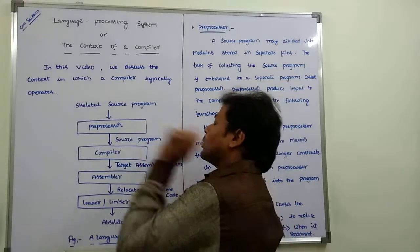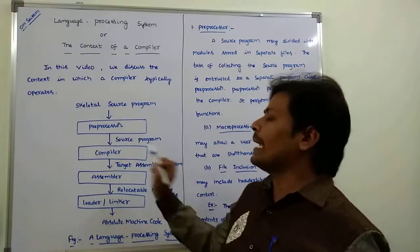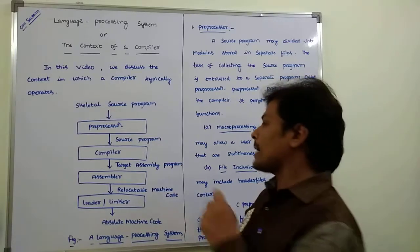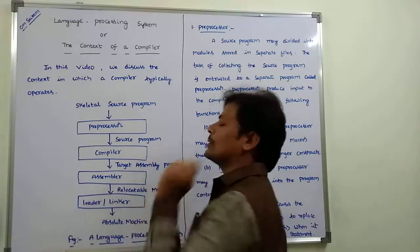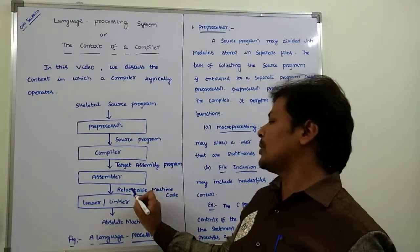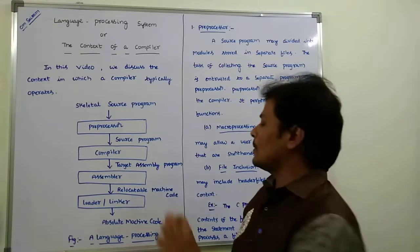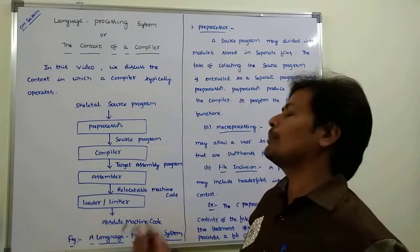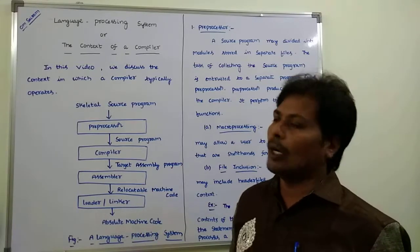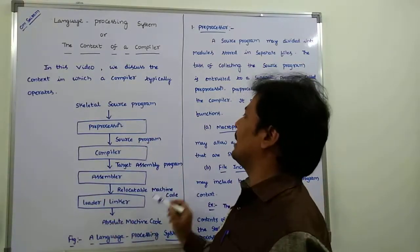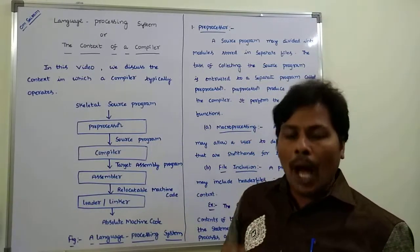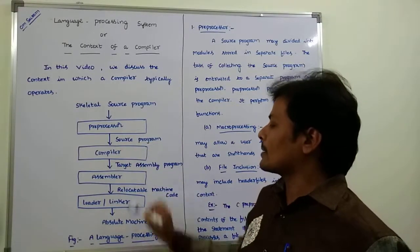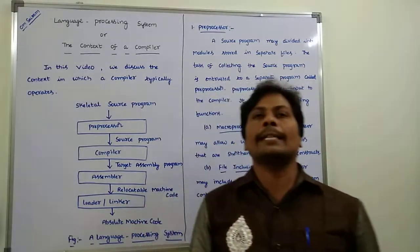The source program is taken as input by the compiler, and it produces the target assembly program. The target assembly program is input to the assembler. The overall process involves a pre-processor, compiler, assembler, and loader or linker.